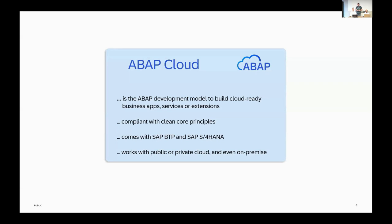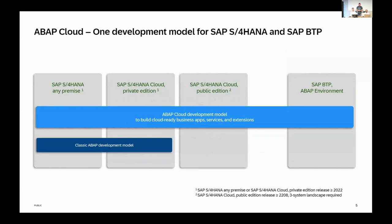If you are using ABAP Cloud, you are of course complying with clean core principles, and it comes with all the deployment options in the ABAP stack — Steampunk on BTP ABAP environment, S4HANA in the private cloud, in the public cloud, and of course also on-premise. We have the classic ABAP development model available in the on-premise world and S4HANA private cloud, but we recommend for future development the ABAP Cloud development model, which is available in all deployment options.